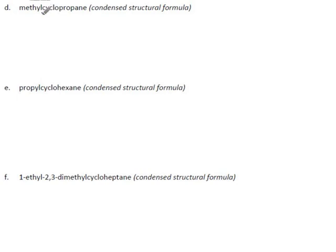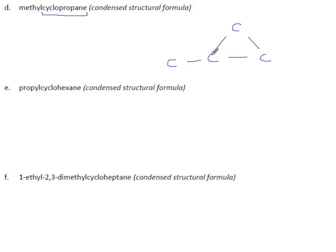Methylcyclopropane: propane means three carbons in a ring — cyclopropane. Methyl means put a methyl group on one of these. I didn't need to number anything because if you put a methyl group on, it's automatically carbon number one, so there's no need to state the number — that's why it's left out of the name. They want condensed structural, so we do our hydrogens. The ones on the end are always CH3s unless there's a double bond. Three bonds used there — one left. Two bonds used here — two left. Two bonds used here — two left.